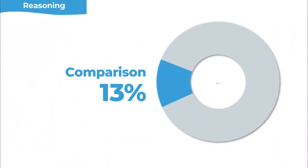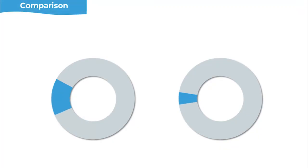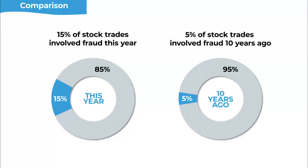Now let's look at another situation you'll occasionally face on sufficient assumption questions: some arguments are built around comparative reasoning. About 13% of sufficient assumption questions use comparative reasoning as opposed to conditional reasoning. This involves the size of groups or the amount of something changing over time. For example, if this year 15% of stock trades involve fraud, and 10 years ago only 5% of stock trades involved fraud, does that mean more stock trades involve fraud today? It depends on how many stock trades occurred each year.